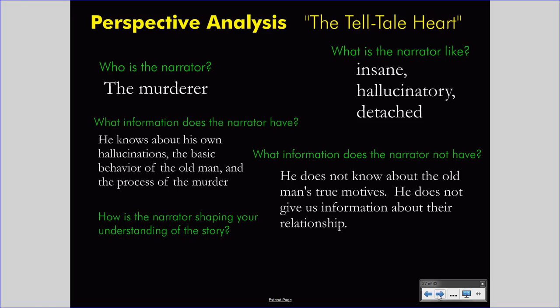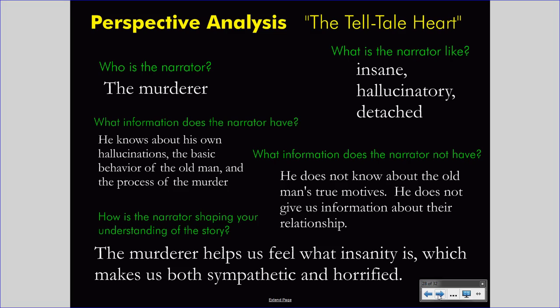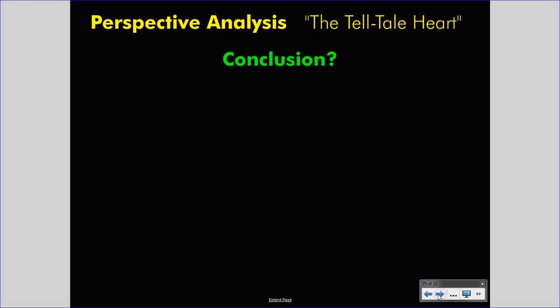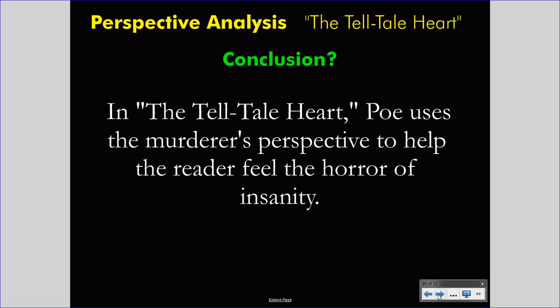How is the narrator shaping your understanding of the story? Since Poe limits us to the perspective of an insane man, he must be asking us to understand what it feels like to be that insane man. The murderer helps us feel what insanity is, which makes us both sympathetic and horrified. Poe has placed us in the first-person perspective of an insane man and asks us to understand what that existence is like. In The Tell-Tale Heart, Poe uses the murderer's perspective to help the reader feel the horror of insanity. He wants his audience to understand insanity, or at least experience it, and he uses the first-person perspective of the murderer to accomplish this. This is a standard perspective analysis, and it's fairly simple if you follow this questioning technique.